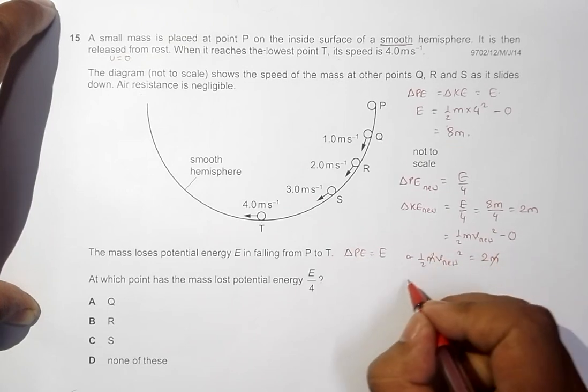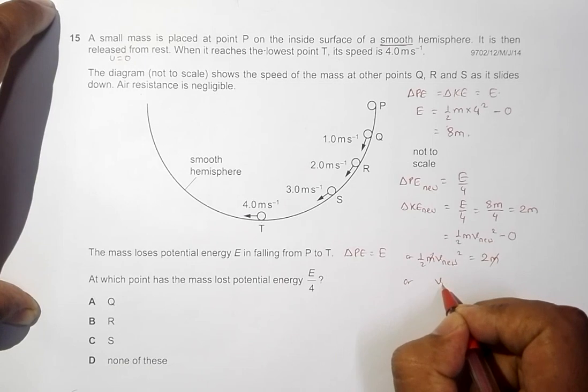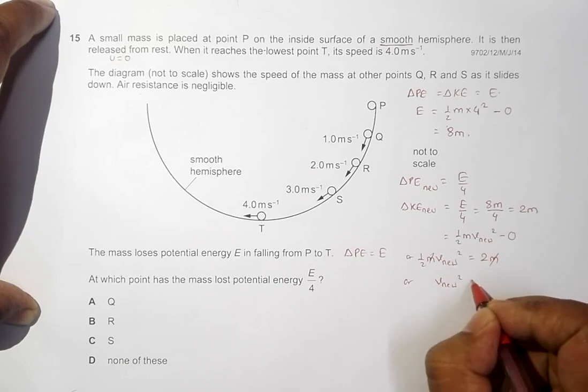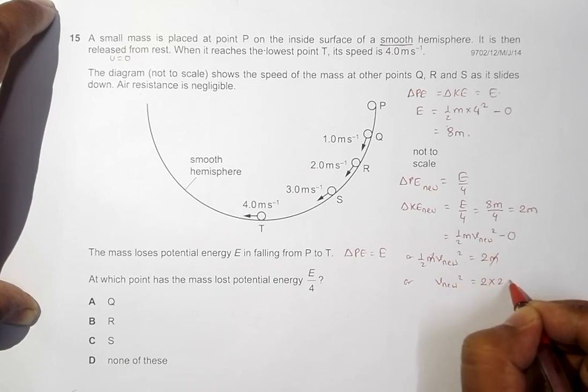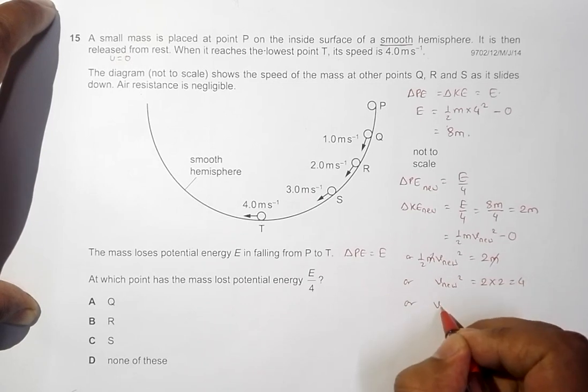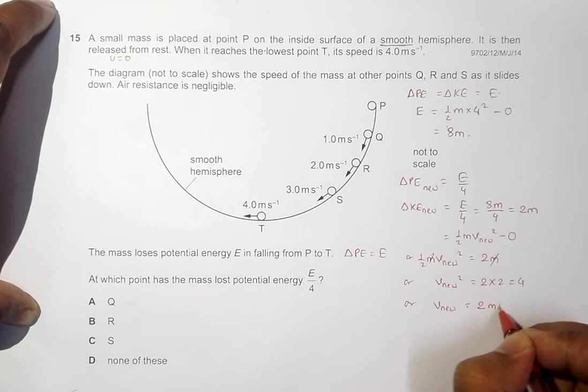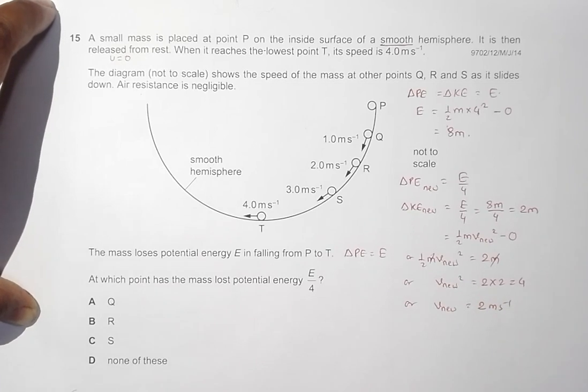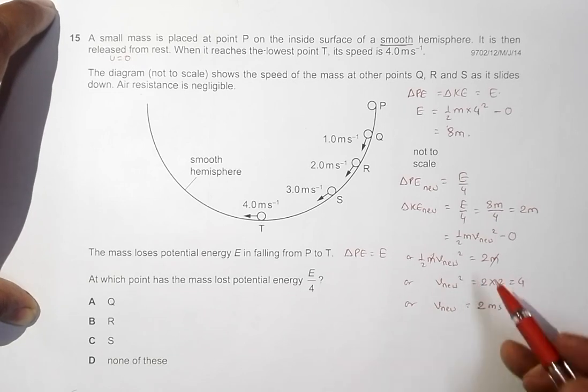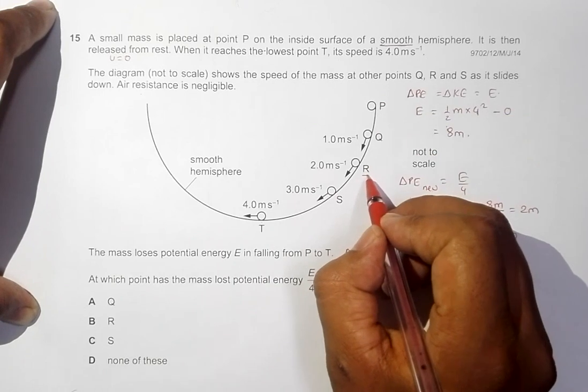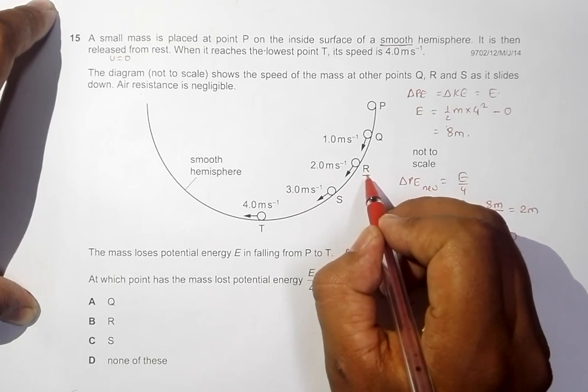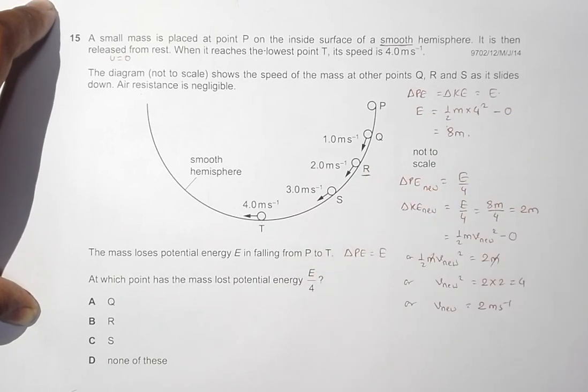M cancels out, which gives us V new squared equals 2 times 2, equal to 4, and V new equals 2 meters per second. So this happens at that point where the velocity is 2 meters per second. Going through these, it is point R where this happens. So the choice is B.